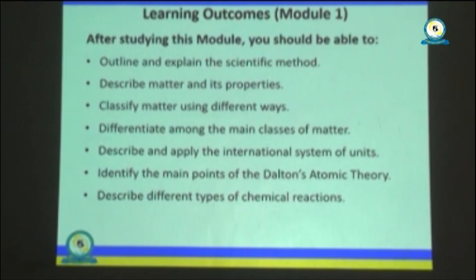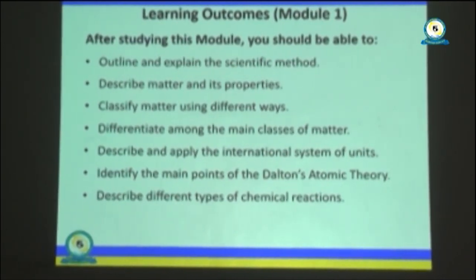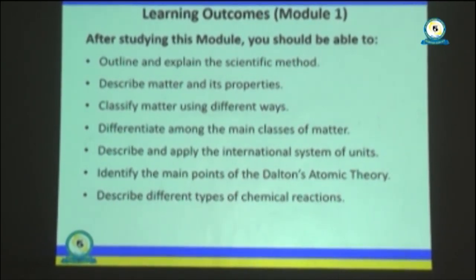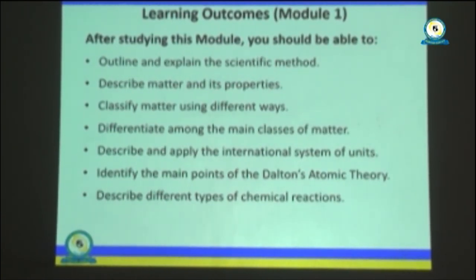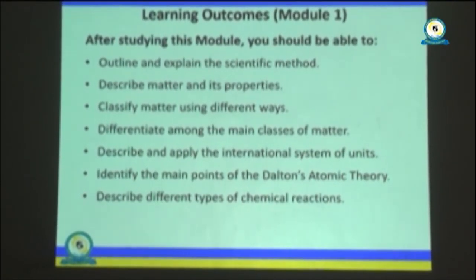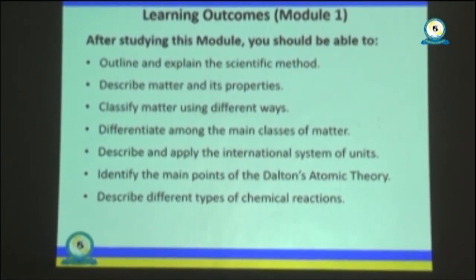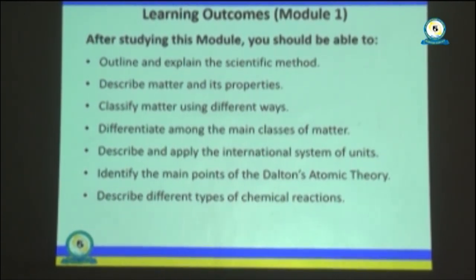After studying the first module, you should be able to describe and outline the scientific method, describe matter and its properties, differentiate between different classes of matter, describe and apply the international system of units, and identify the main points of the Dalton atomic theory including its drawbacks, that led to the establishment of the modern atomic theory. You should also be able to describe different types of chemical reactions.